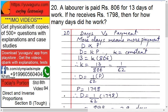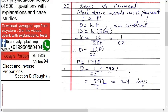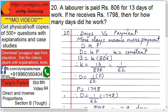Since he receives 1798 rupees, P equals 1798. Substituting: D equals 1798 upon 62. Dividing, 1798 by 62 gives 29. So the laborer worked 29 days.